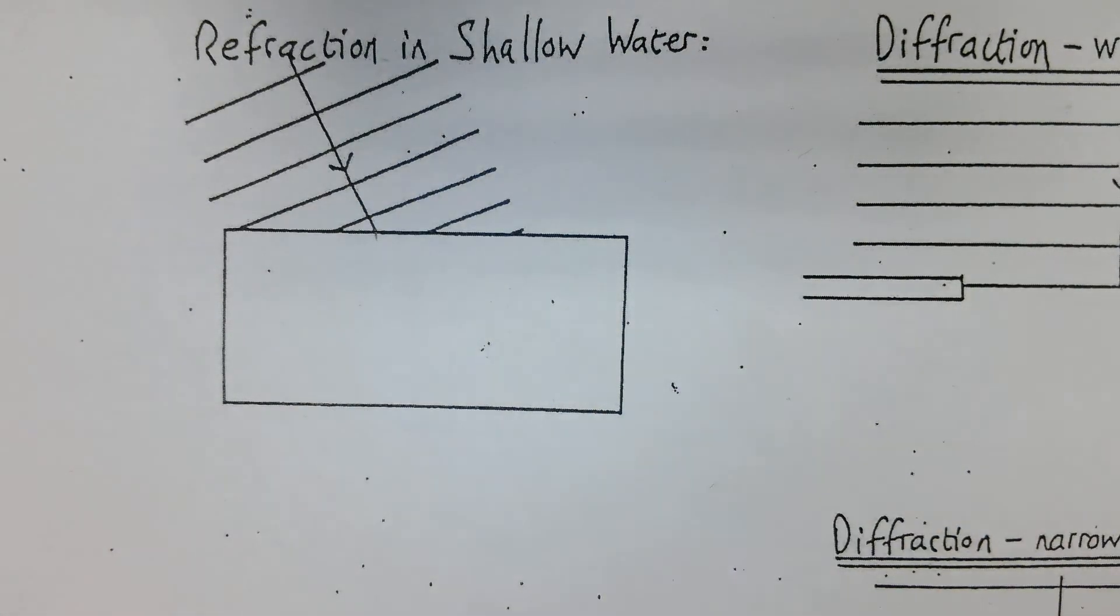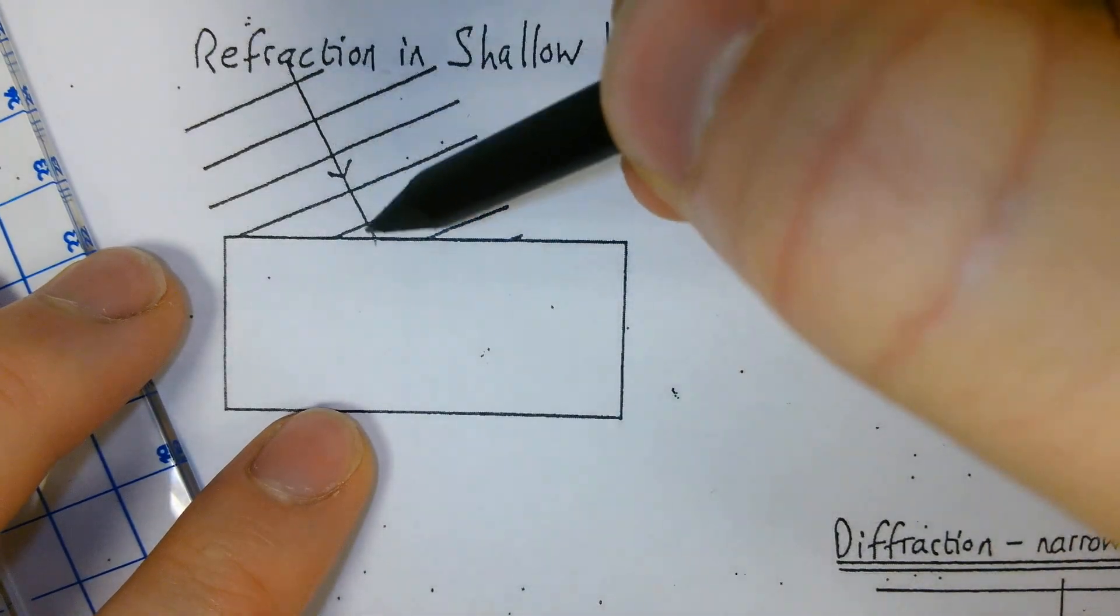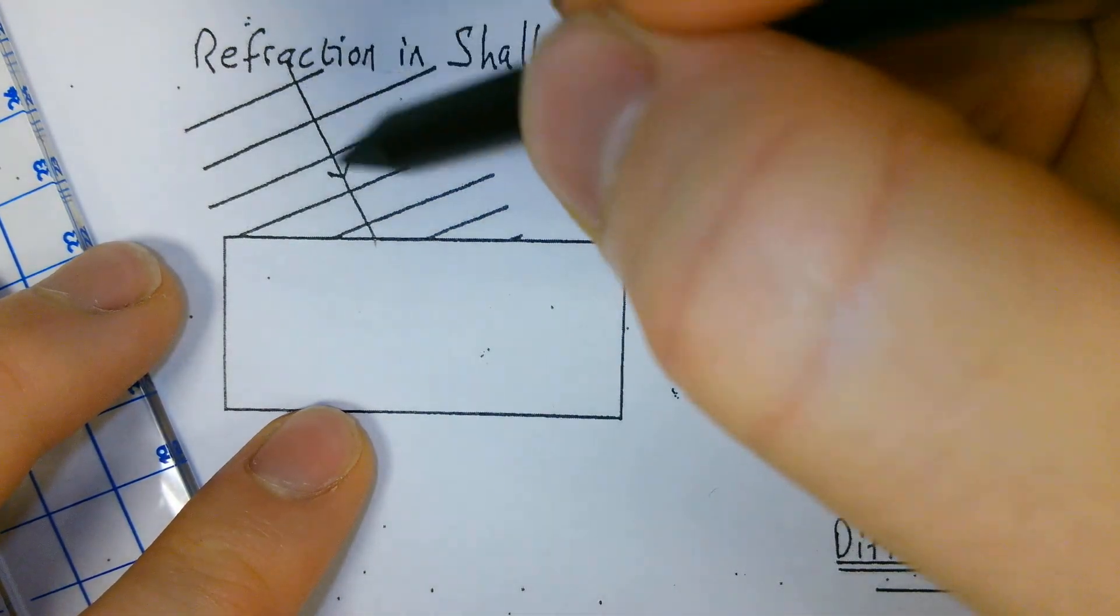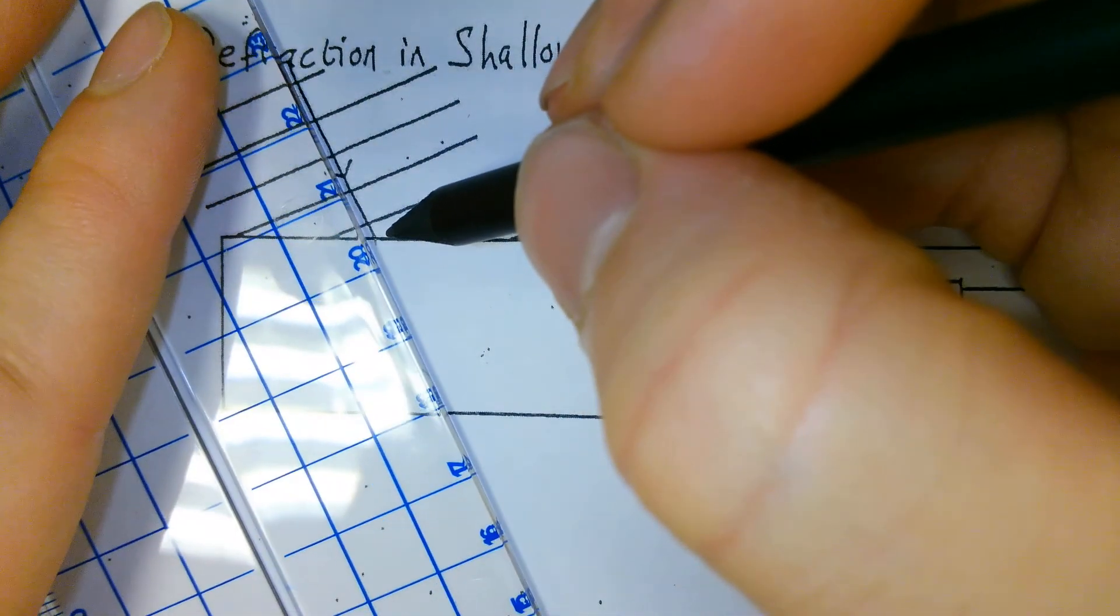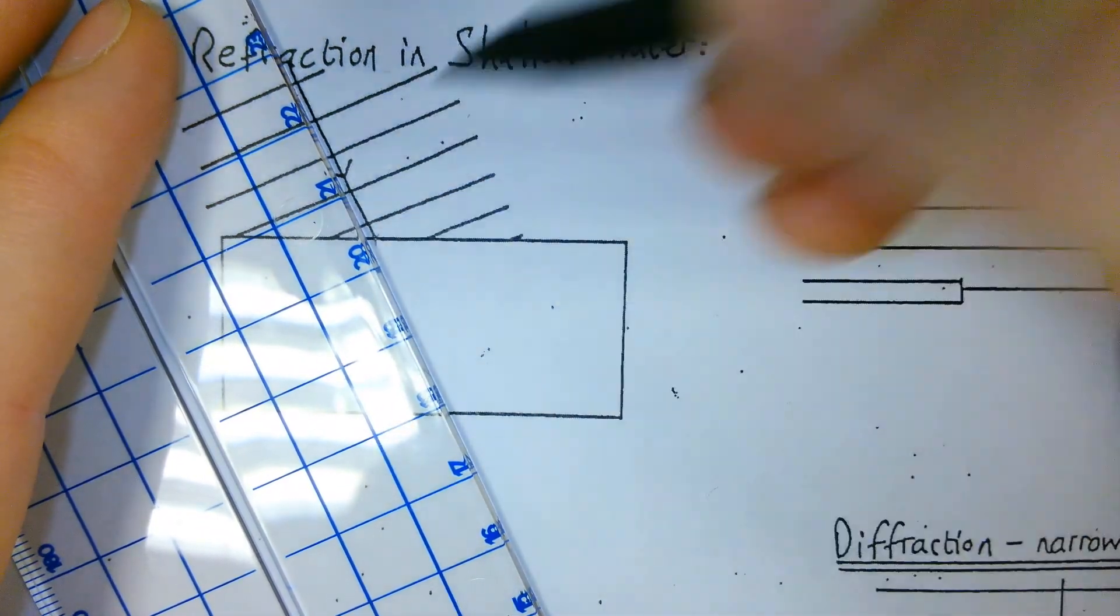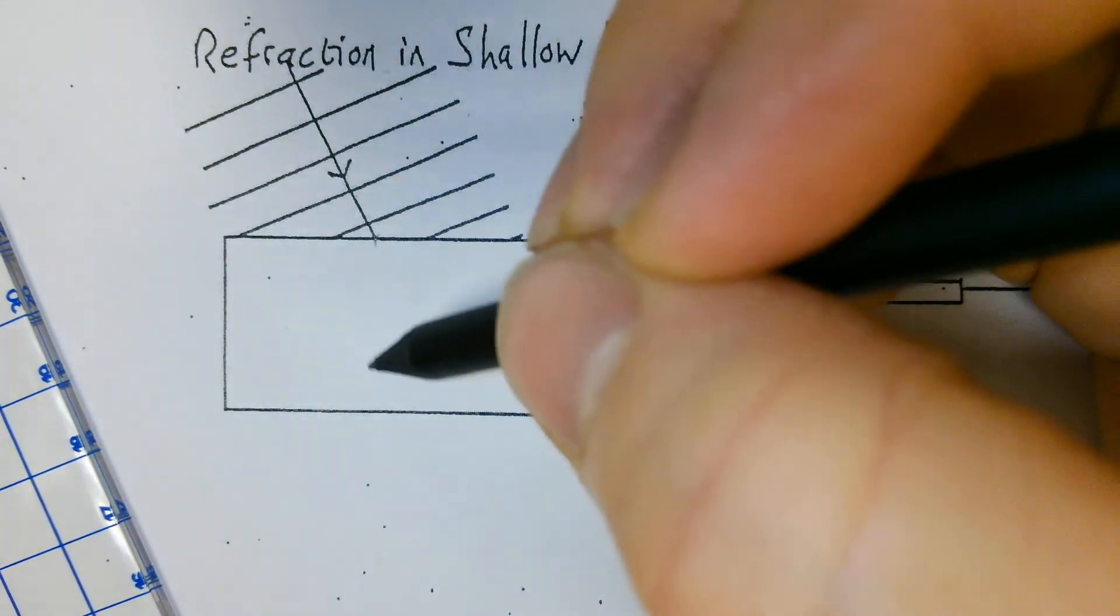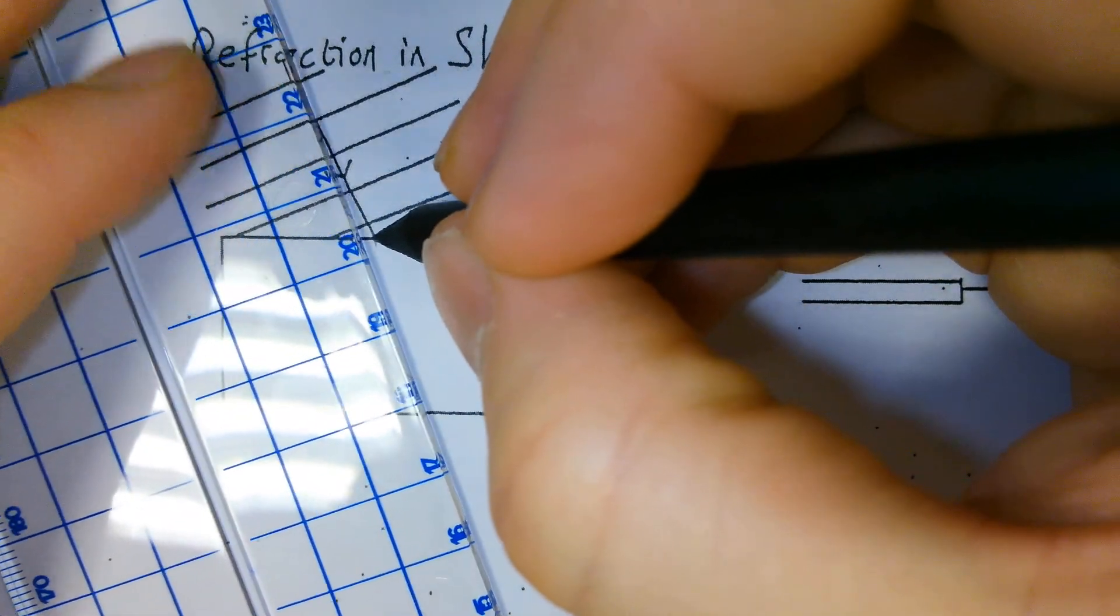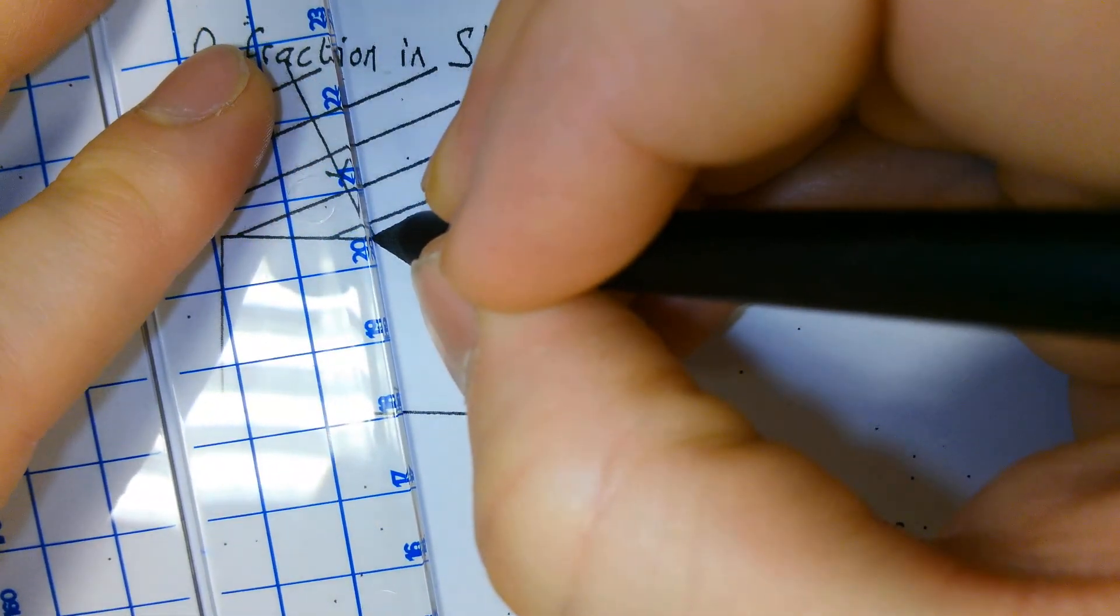Now, where we're going to start is you've got your plane wave coming in here, and you've got this line in the middle showing which direction the wave is traveling. Now, as the wave enters the shallow water, which is here, it's like it's going to something that's more dense, or refracted towards the normal.